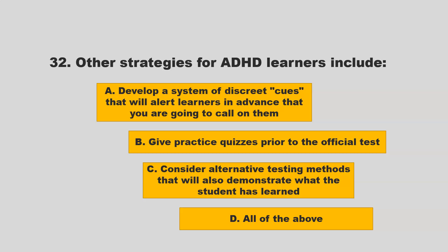Other strategies for ADHD learners include: A) develop a system of discrete cues that will alert learners in advance that you are going to call on them; B) give practice quizzes prior to the official tests; C) consider alternative testing methods that will also demonstrate what the student has learned; D) all of the above. If you chose D — all of the above — you are correct.